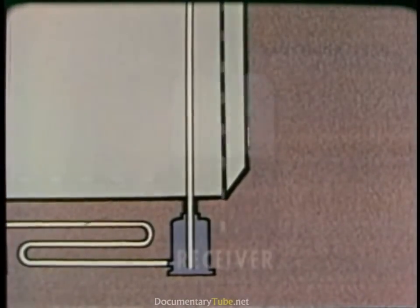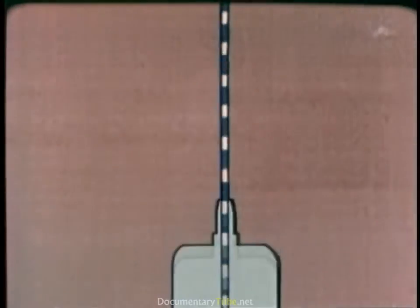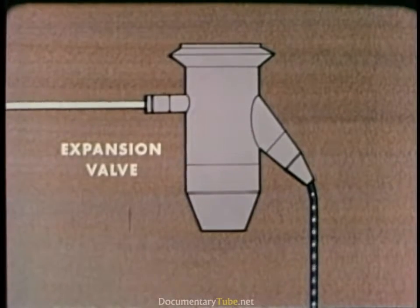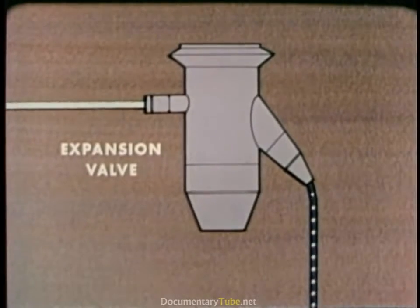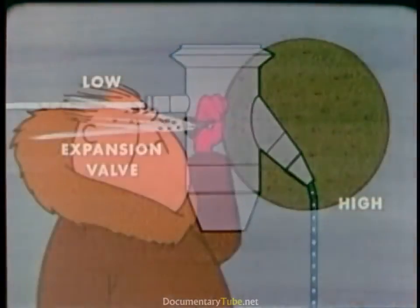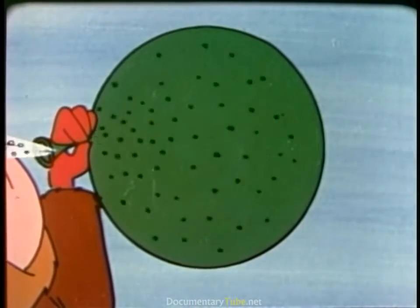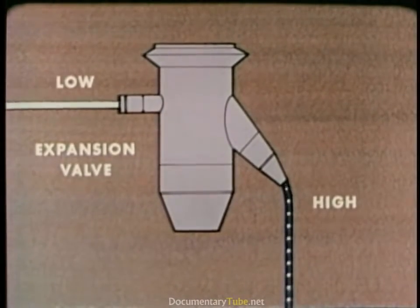Now let's see how a refrigerator works. We'll begin at the receiver where the excess refrigerant is stored. It is in the liquid state and under high pressure. The high pressure forces the refrigerant through the liquid line to the expansion valve. This valve causes a pressure drop. The high pressure liquid becomes a low pressure liquid. This is like letting air slowly out of a balloon. The air in the balloon is still under high pressure, but the air that gets through expands and its pressure drops. In the same way, refrigerant that passes through the expansion valve expands and its pressure drops.